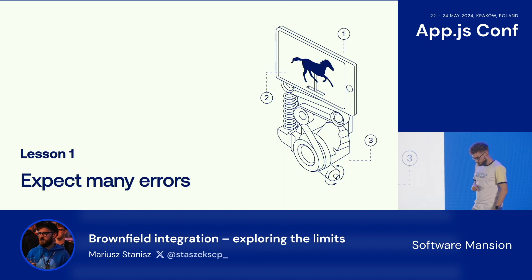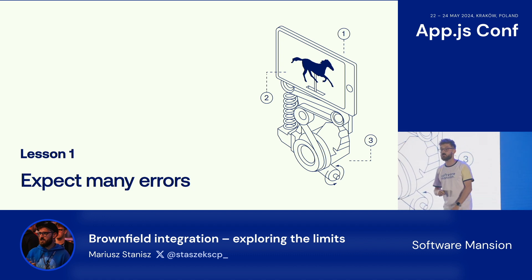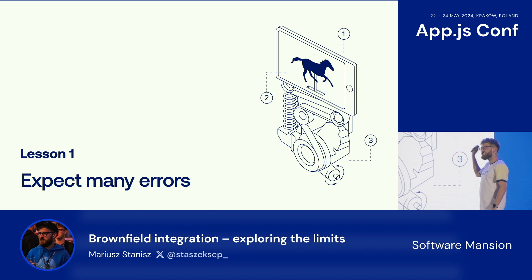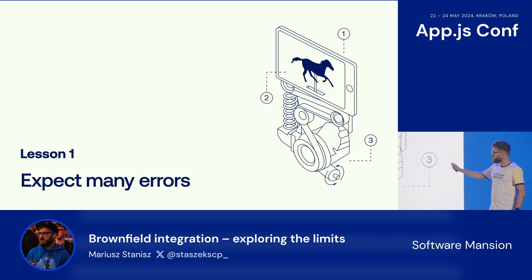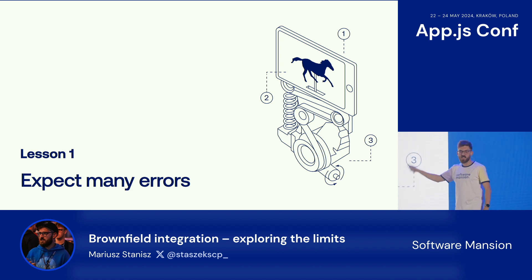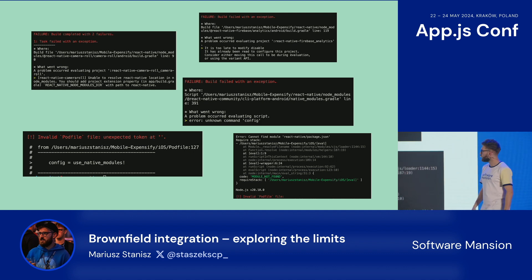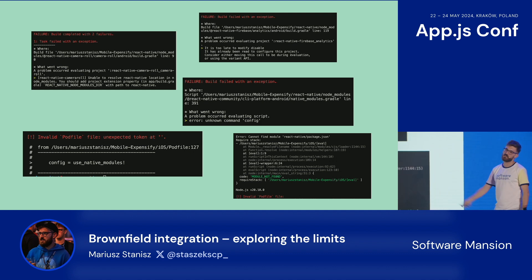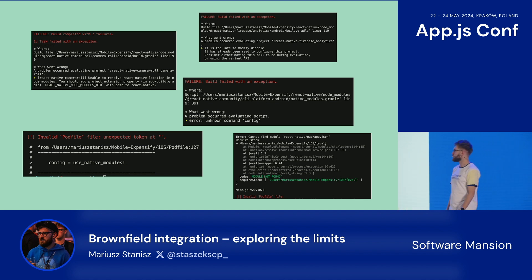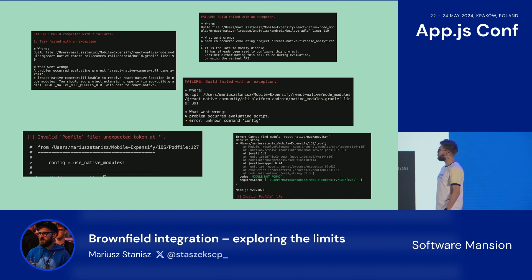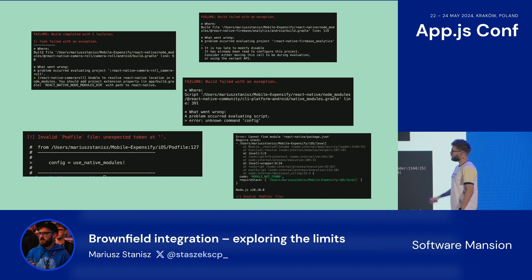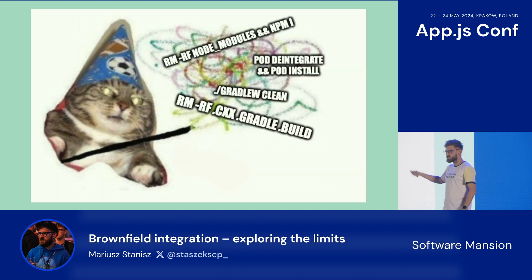I'm going to share some lessons I've learned during the brownfield journey. The first and most important one: expect many errors. What you see is just some of them — only for Android. Of course there are iOS errors too, but this is just a part of them. You can use the usual React Native spells — removing node_modules, npm install, pod install — but usually they don't work.